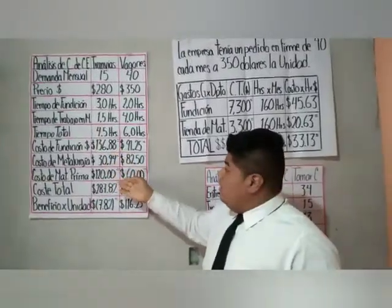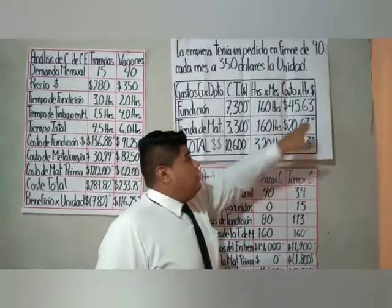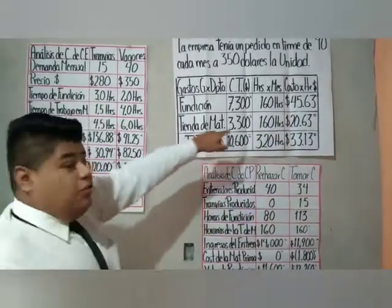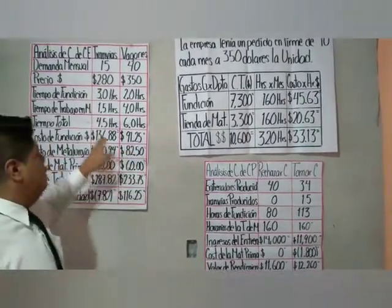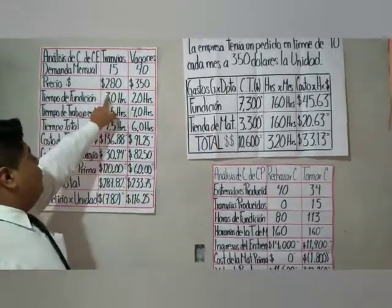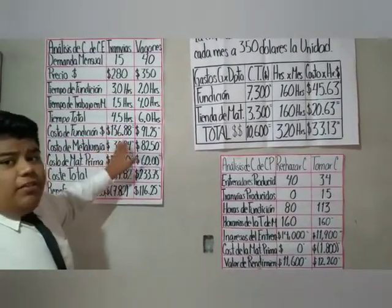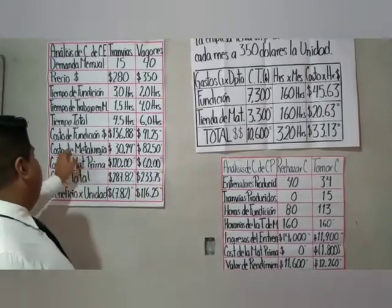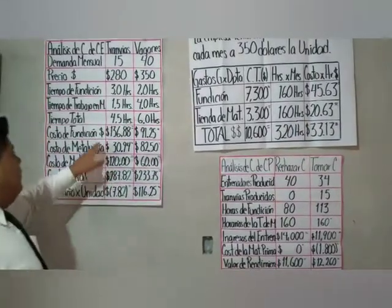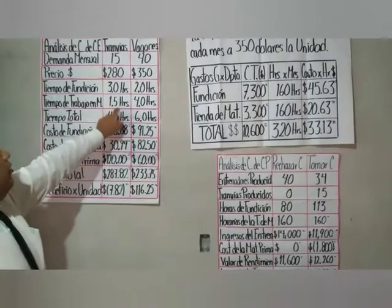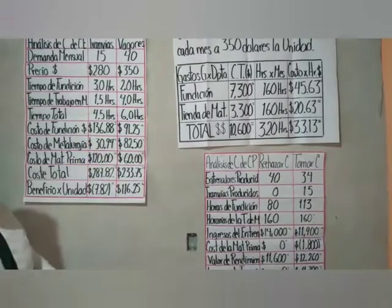Los costos se determinan en base al costo por hora. Para fundición de tranvías: $45.63 por hora multiplicado por 3 horas da $136.88 por unidad. Para metalurgia de tranvías: $20.63 por hora multiplicado por 1.5 horas da $30.94 por unidad. Para vagones, el costo de fundición es $45.63 multiplicado por 2 horas dando $91.25. El costo de metalurgia para vagones es $20.63 multiplicado por 4 horas dando $82.50.